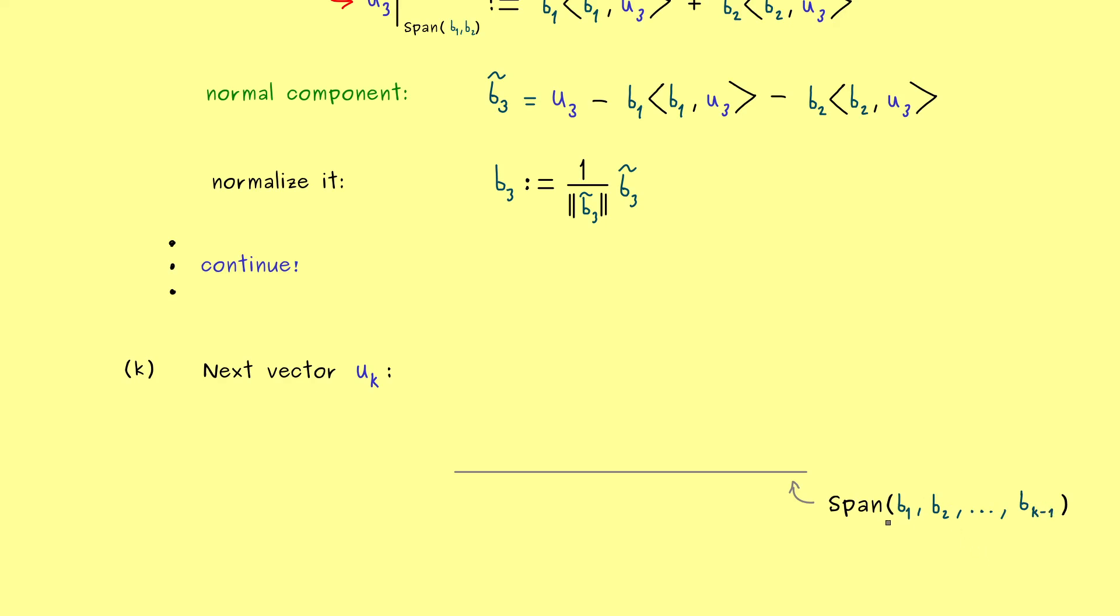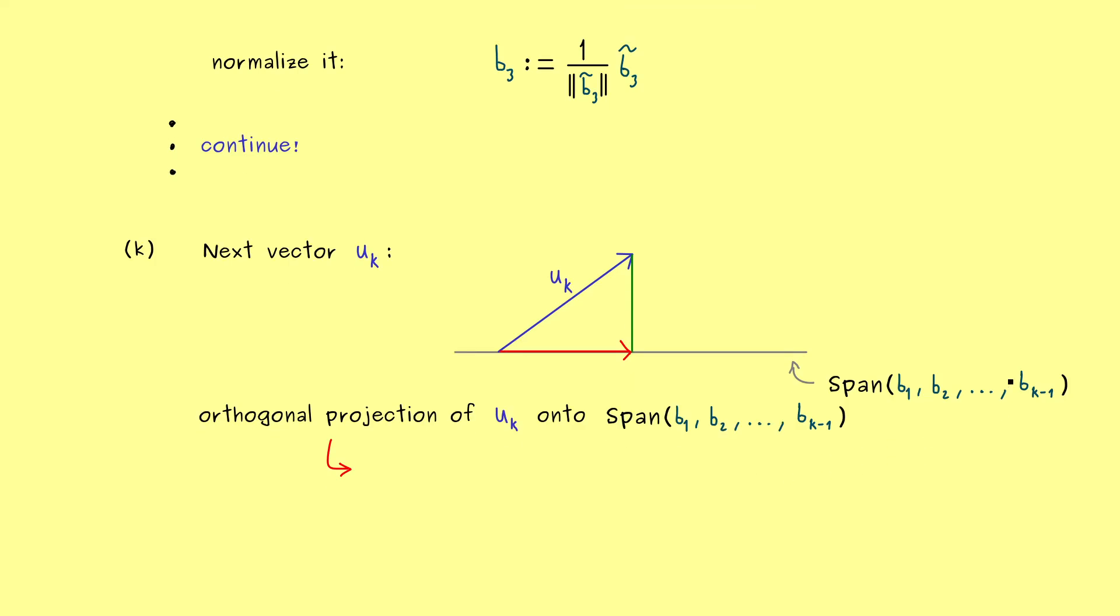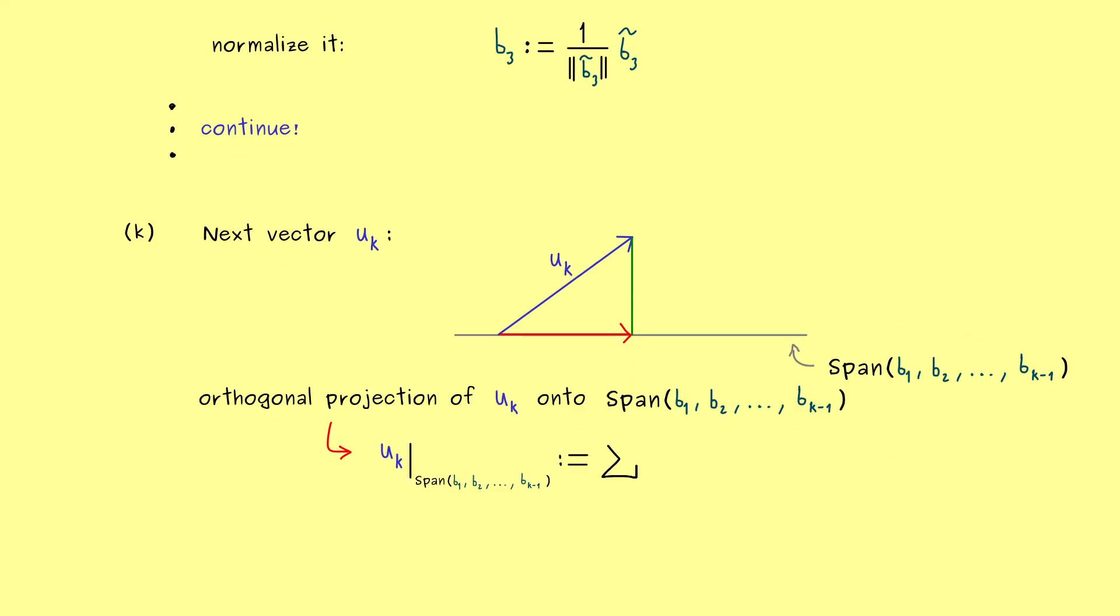In fact, this is an ONB as the steps before tell us. And now since uₖ does not lie in this span, we can do the orthogonal projection again. And then I don't have to tell you, we will take the normal component again. So the only thing you have to know here is the general formula of the orthogonal projection. And as before, this is really easy because we have an ONB. It's simply given by the sum of the one-dimensional projections. Hence we have j that goes from 1 to k-1, and then we project uₖ to each bⱼ.